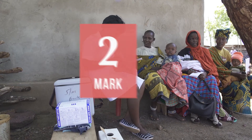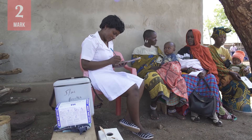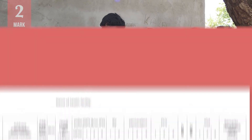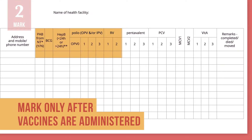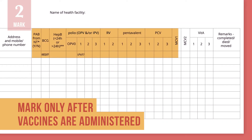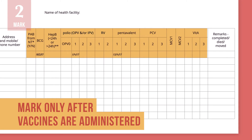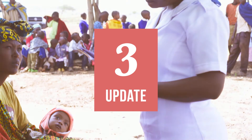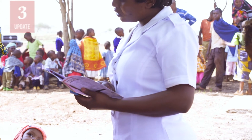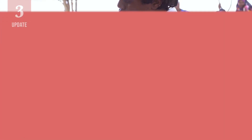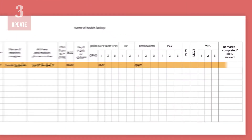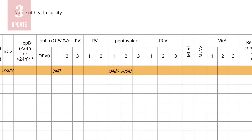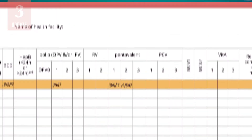The infant receives his or her vaccines. Mark down the date of these new vaccinations in the register, but only after they're administered to the infant. Next time the infant returns for a follow-up visit, find his or her entry and mark any new vaccinations given during the visit. That is the process for capturing data in an immunization register.